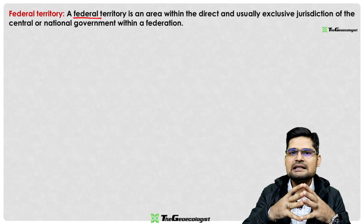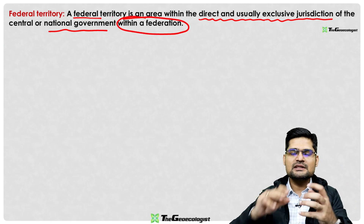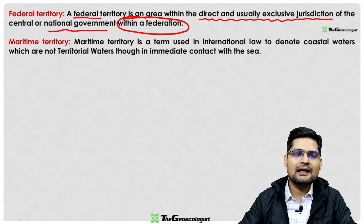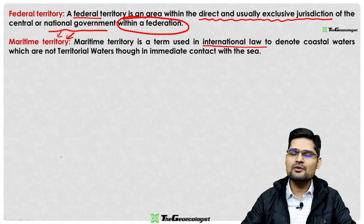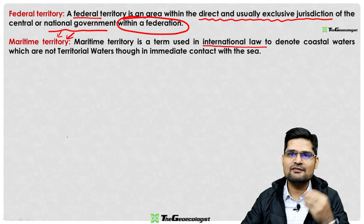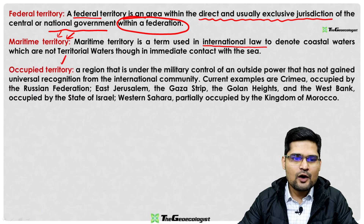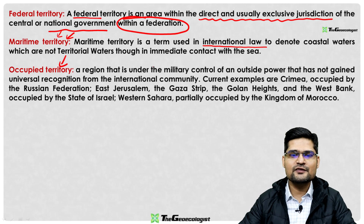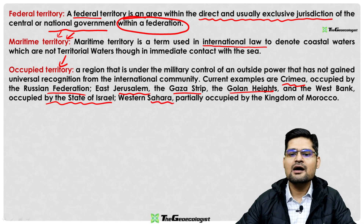Maritime territory refers to boundaries under international law of the sea — the UN conventions covering exclusive economic zones and territorial seas. Occupied territory is held by force by an outside power — examples include Crimea occupied by Russia, East Jerusalem, Gaza Strip, and Golan Heights occupied by Israel, and Western Sahara partially occupied by Morocco.